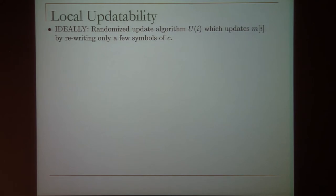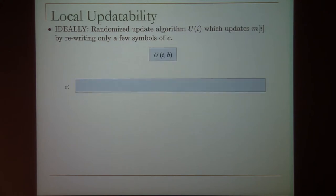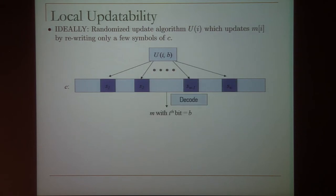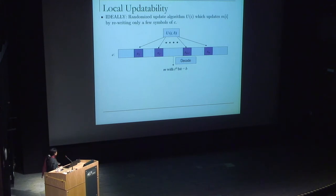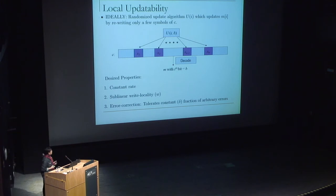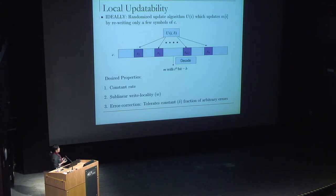Ideally, similar to how locally decodable codes had a randomized decode procedure, we'd like to have a randomized update procedure which would update some specific bit of the message by rewriting only a few symbols of the codeword. We'd like an update algorithm that takes as input an index and the bit you want to set, modifies just a few symbols of the codeword, and then the decode algorithm should give you back the same message except with the i-th bit set to whatever you want. What we want is similar to locally decodable codes: constant rate, sub-linear locality, sub-linear write locality, and we want to tolerate a constant fraction of errors.